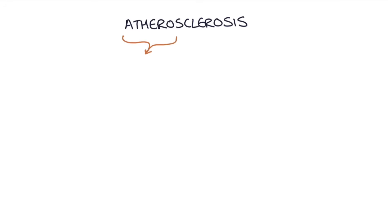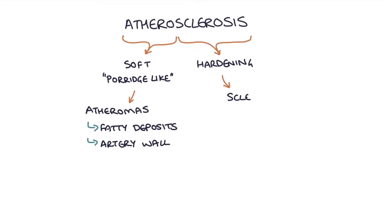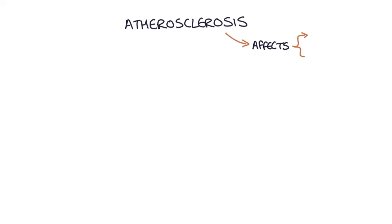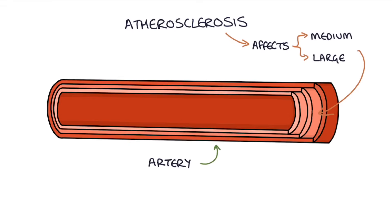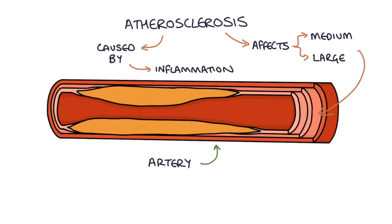First let's talk about atherosclerosis. 'Athero' basically means soft or porridge-like, and sclerosis is hardening. Atherosclerosis is really a combination of atheromas, which are fatty deposits in the artery wall, and sclerosis, which is the process of hardening or stiffening of the blood vessel wall. Atherosclerosis affects the medium and large arteries and is caused by chronic inflammation and activation of the immune system in the artery wall, causing deposits of lipids followed by the development of fibrous atheromatous plaques.